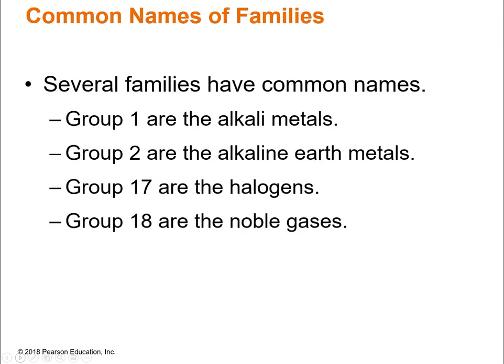These are the common names of families — remember, families are the same as groups, the vertical columns. Group 1 is the alkali metals, also known as 1A. Group 2 is the alkaline earth metals, also known as 2A. Group 17 is the halogens, also 7A. And group 18 is the noble gases, also labeled 8A. Groups are labeled 1 through 18, but there's also the number followed by A or B.